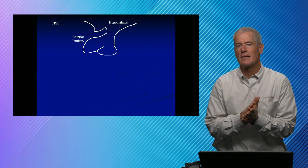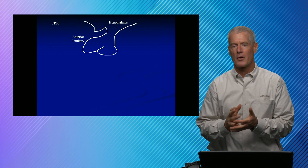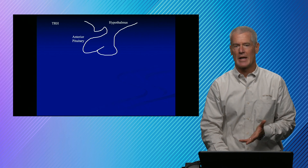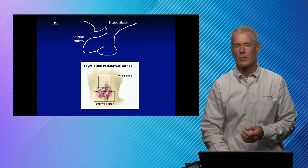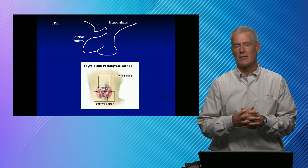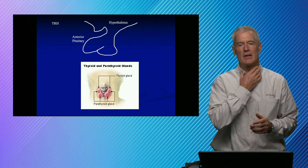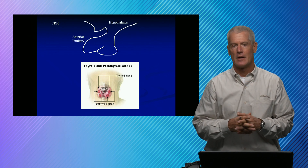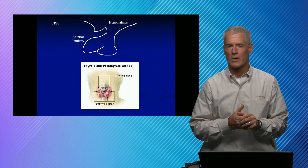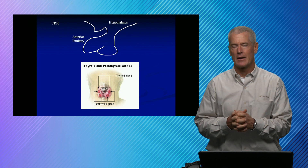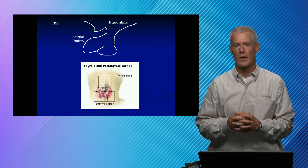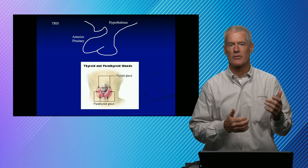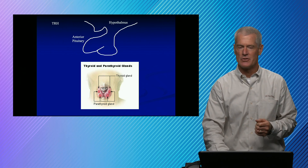Just as a quick reminder and to put it into context, this is under hypothalamic pituitary control. The hypothalamus releases thyroid-releasing hormone, which acts on the anterior pituitary, which releases thyroid-stimulating hormone, and that ends up interacting with receptors on the thyroid gland. The thyroid gland is in your neck. Our diagram also shows the parathyroid gland, which is responsible for calcium homeostasis, whereas the thyroid gland produces thyroxine T4 and T3, really responsible for basal metabolic rate.